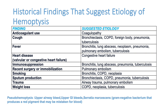Pseudohemoptysis can also result from upper airway bleed or upper GI bleed. Serratia marcescens, a type of gram-negative bacterium, can sometimes produce a blood-like picture in the sputum.